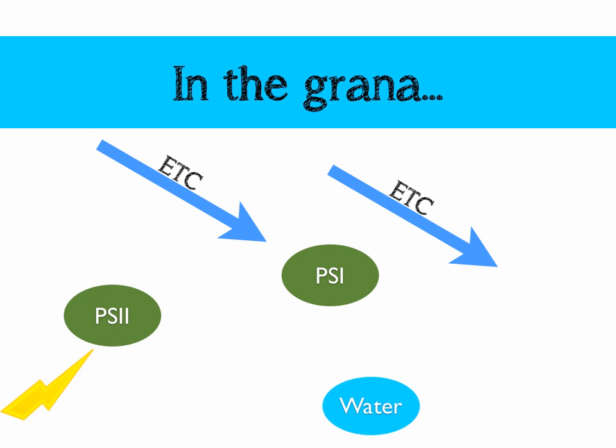However, in this case, we've got our first electron transport chain, which is responsible for producing ATP, and our second electron transport chain is responsible for doing something slightly different, as we'll see.